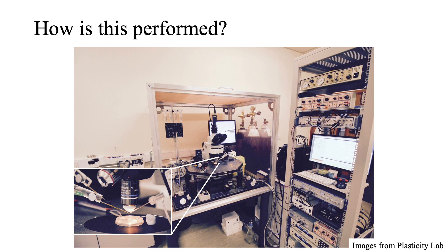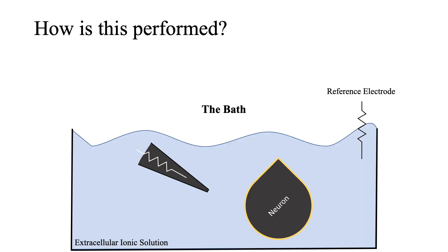The recording electrode is connected to a tower of sophisticated electrophysiological equipment dedicated to recording electrical signals. The electrode is visualized on a monitor via a camera that is attached to the microscope. You can see it here in this image behind the eyepieces of the microscope. Movement of the recording electrode is accomplished via micromanipulators that allow for fine, precise movements.